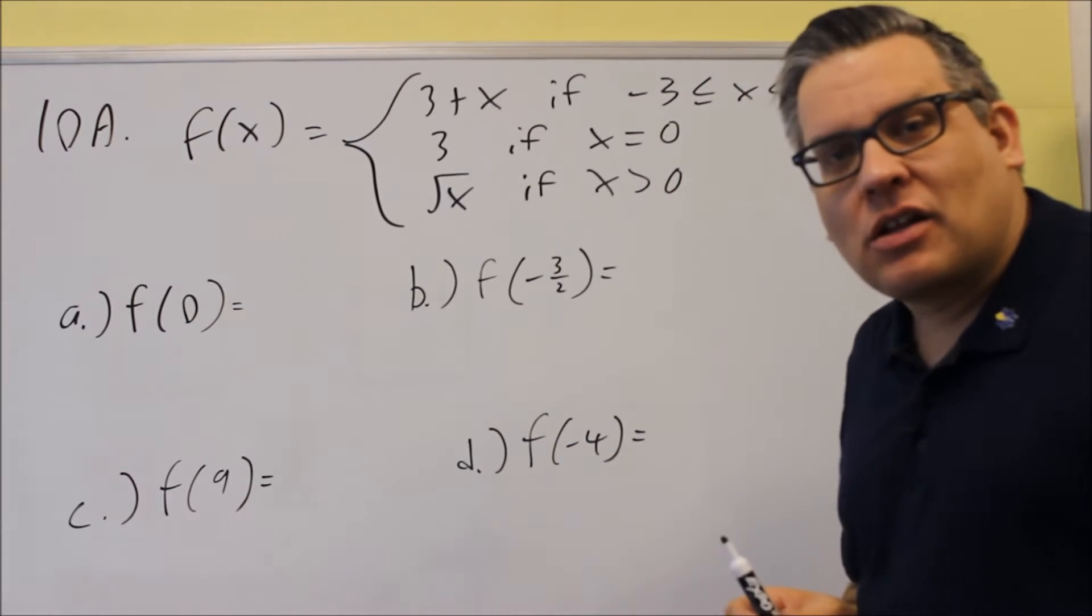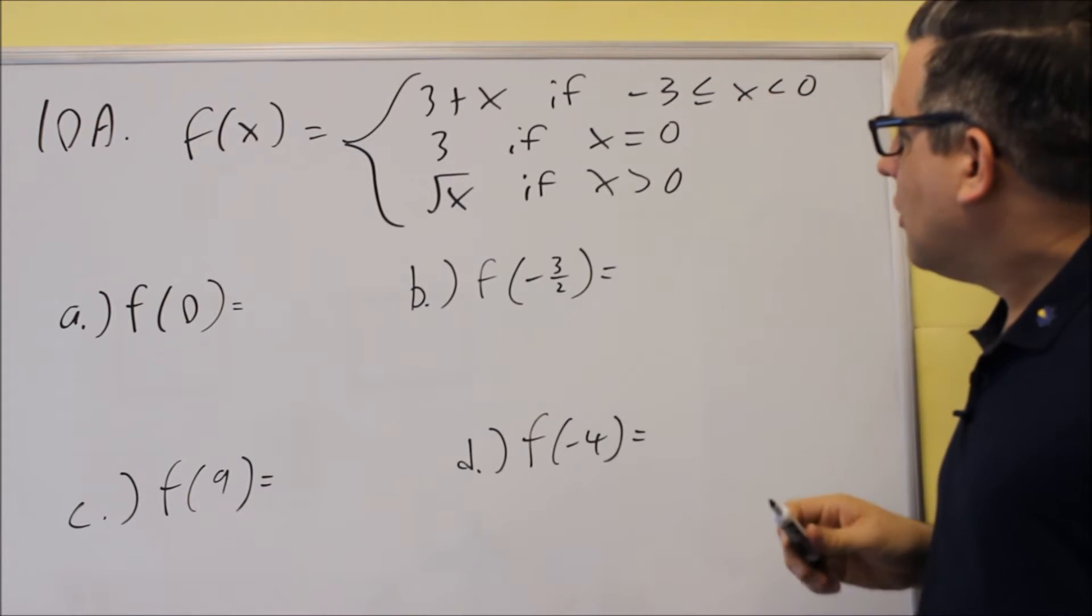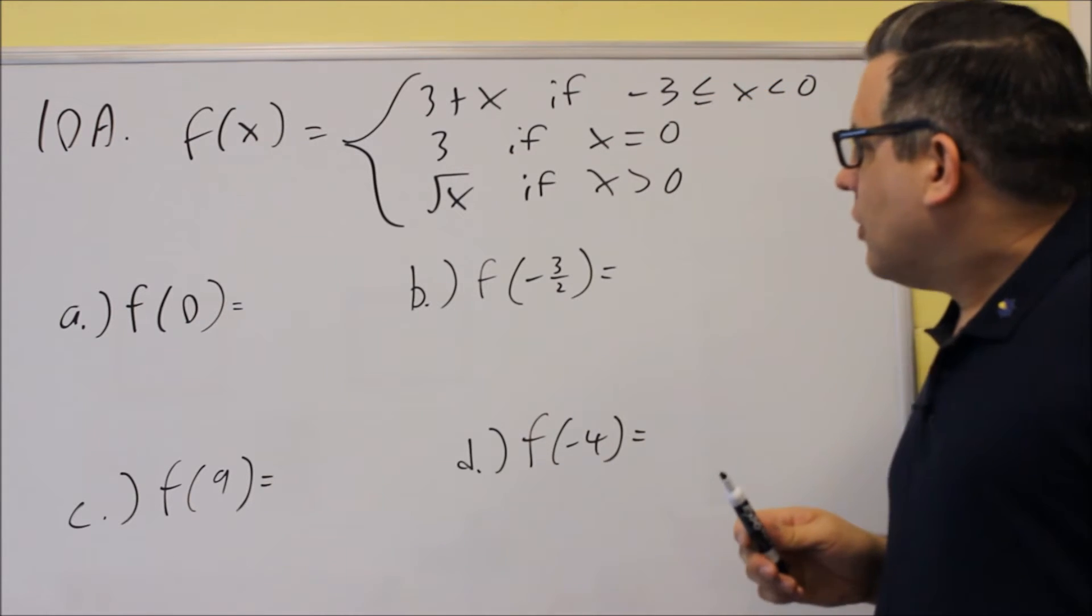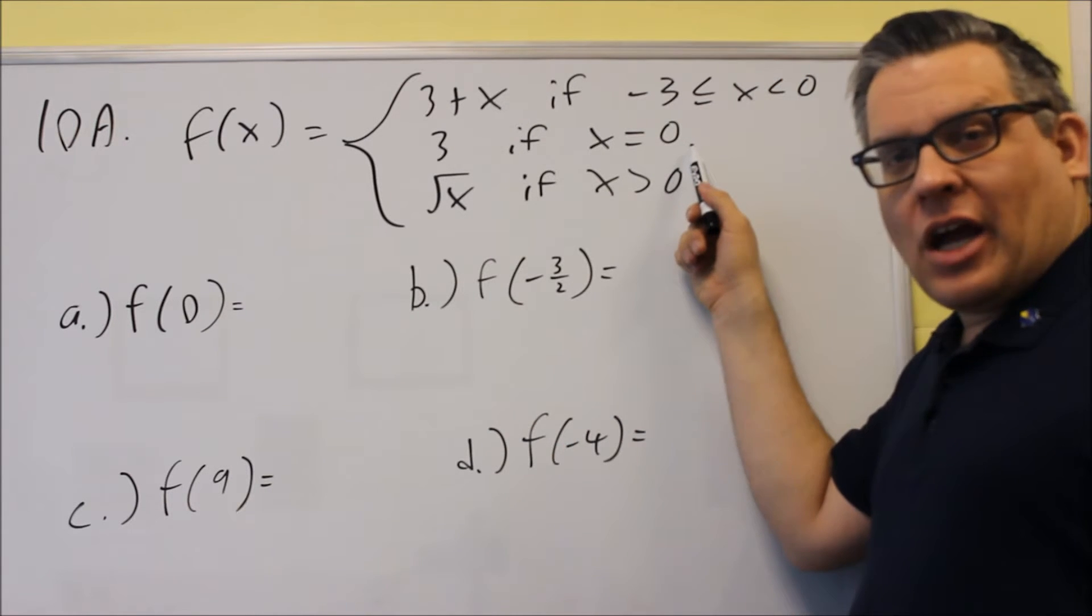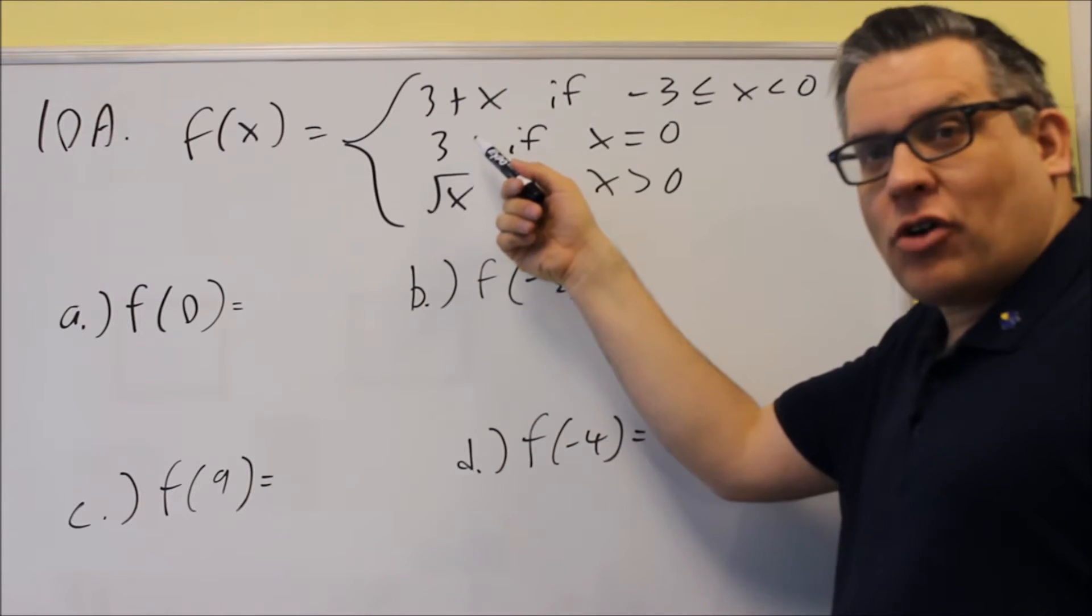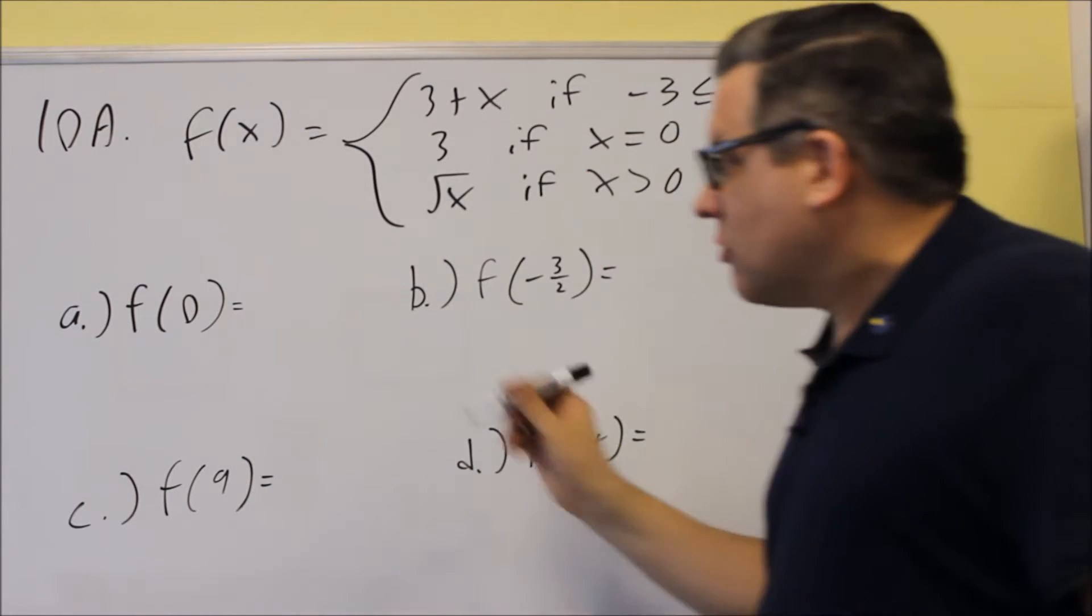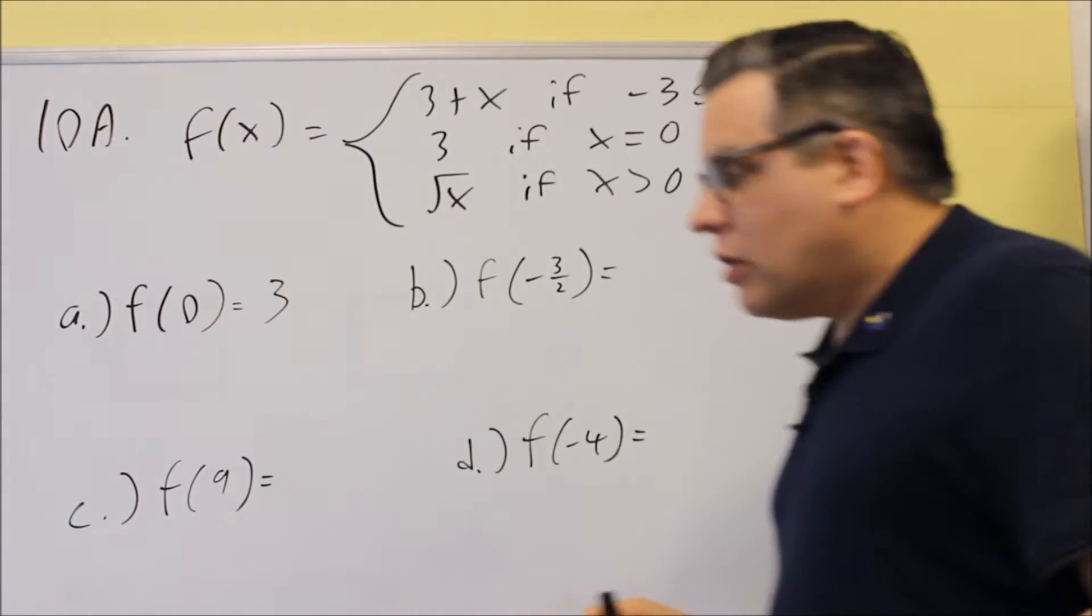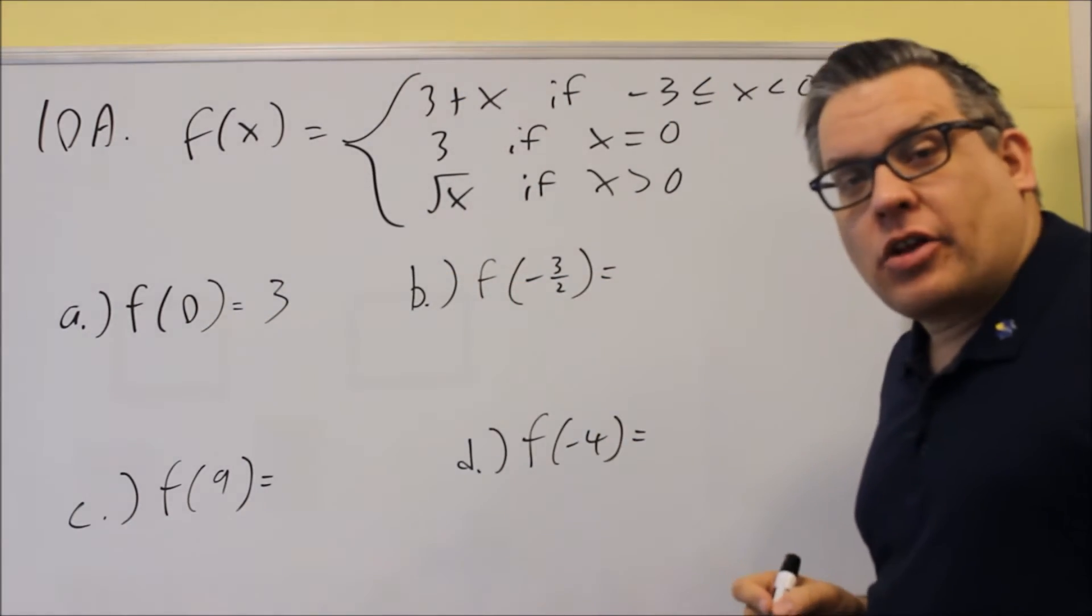You look at the number that's inside the parenthesis, and you see which one of these that would be included. Okay, so for this f of 0, we're only going to have that, we're only going to get 3 for our answer. Because it says whenever x is 0, automatically our answer is 3. So there's nothing to plug in for that one. Your answer is automatically going to be 3.